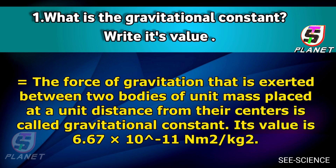Question number one: What is the gravitational constant? Answer: The force of gravitation that is exerted between two bodies of unit mass placed at a unit distance from their centers is called gravitational constant. Its value is 6.67 × 10⁻¹¹ Newton meter square per kg square.